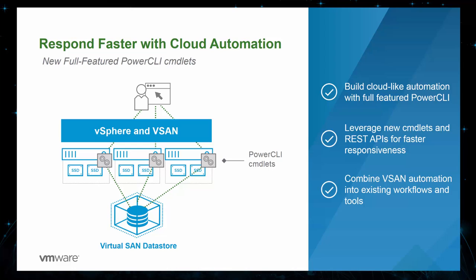With vSAN 6.5's new PowerCLI cmdlets, business and IT can respond faster than ever before. The full-featured cmdlets and REST API allow you to fully automate your administrative tasks, saving you time. This enterprise-class automation brings cloud management flexibility to storage by supporting common REST APIs, accelerating infrastructure responsiveness and SLAs with a fully scalable, automated, and simplified operational management.